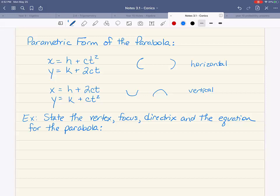I'm giving it to you in parametric form, x equals four plus six t squared, y equals negative one plus 12 t.